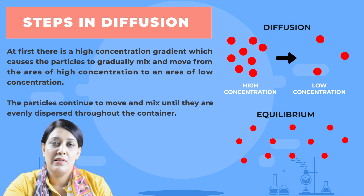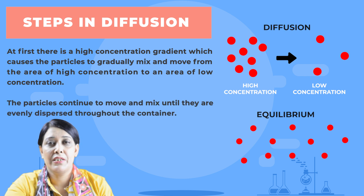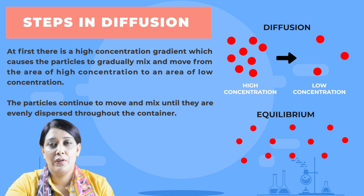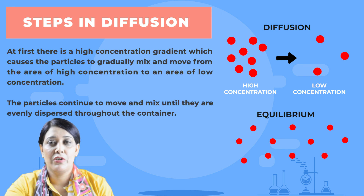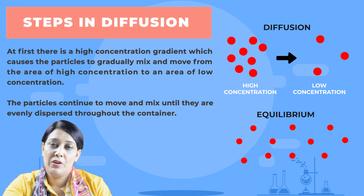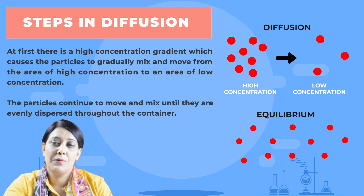Now let's look at the steps in the diffusion process. At first there is a high concentration gradient which causes the particles to gradually mix and move from the area of higher concentration to an area of low concentration. The particles continue to move and mix until they are evenly dispersed throughout the container.